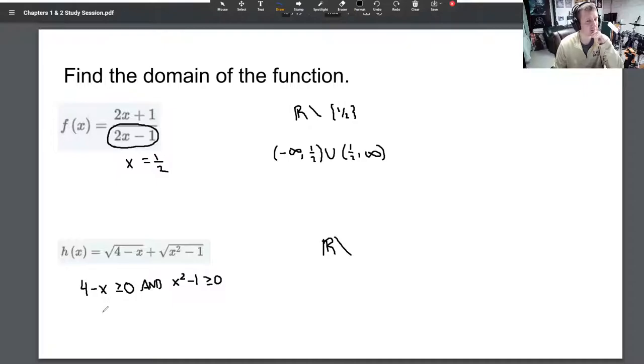The first one is rather easy. If 4 - x is non-negative, then 4 is bigger than or equal to x. On a number line, here's 4. We see that x has to be over here, and it could equal 4. So that's the first inequality.